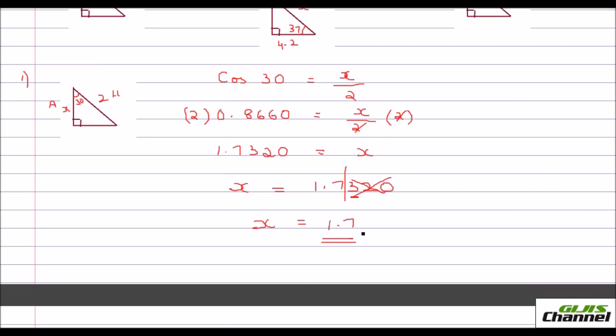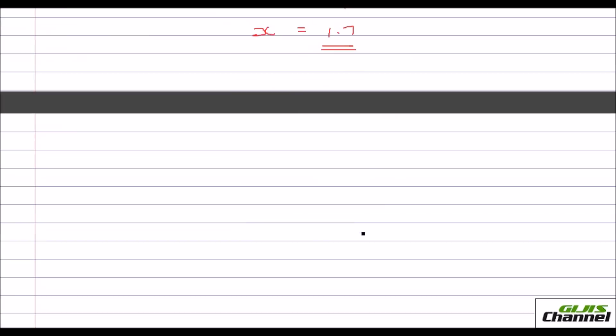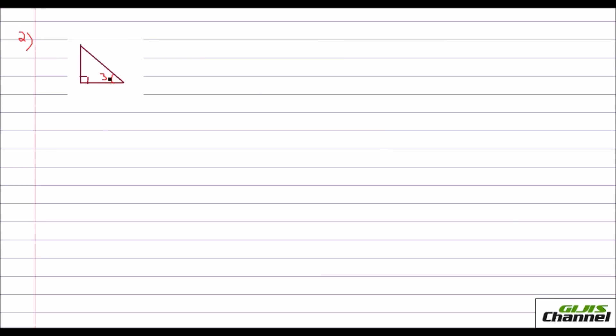So hope you understood this. Let's move on to the second problem. The angle is here 37. And they have given you the adjacent side as 4.2. So this one is given as 4.2. The hypotenuse is to be found out. So that's x.